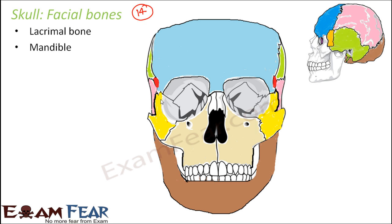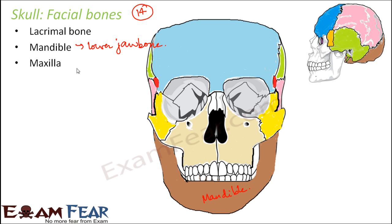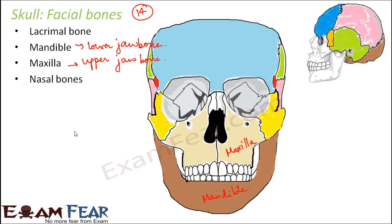The lacrimal bone is among the facial bones. The mandible is the lower jaw bone — you can see it here. The lower jaw is movable because the joint involved is not a fixed joint, which is why we can move it. The maxilla is the upper jaw bone, which is fixed. The cream-colored region you see here is the maxilla, the upper jaw bone.